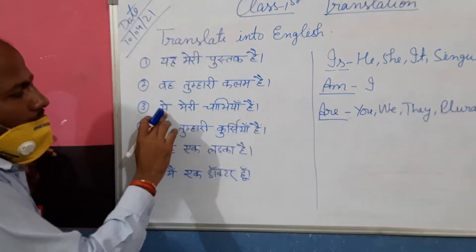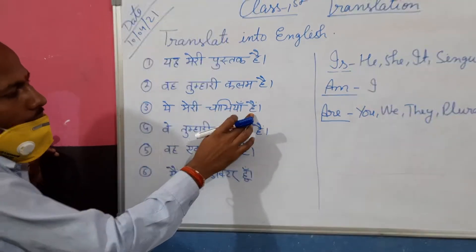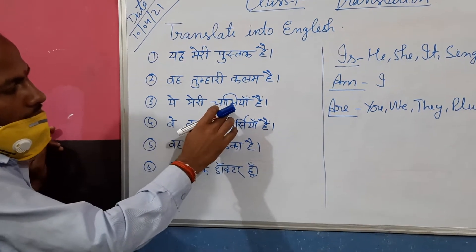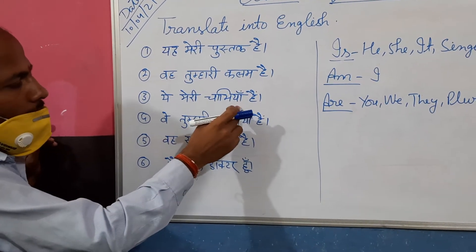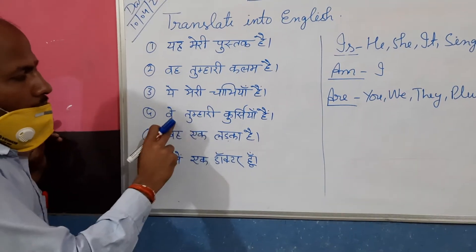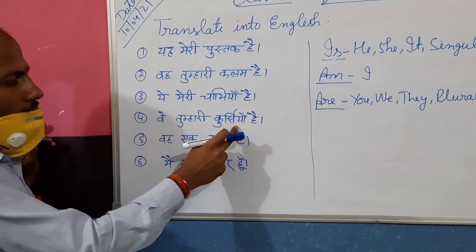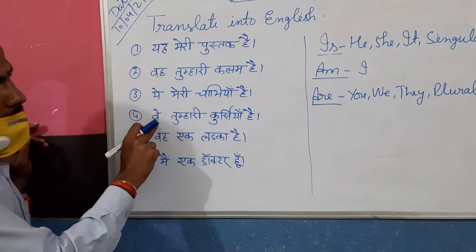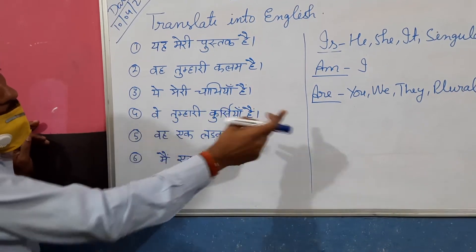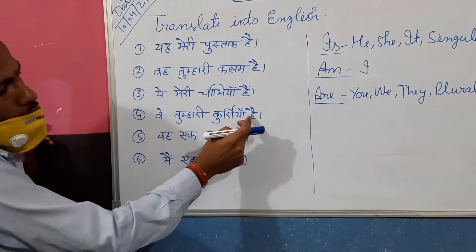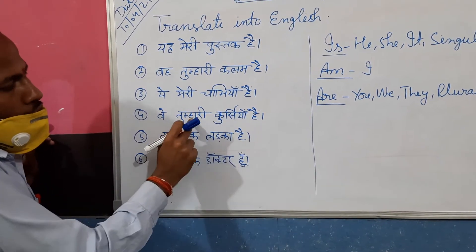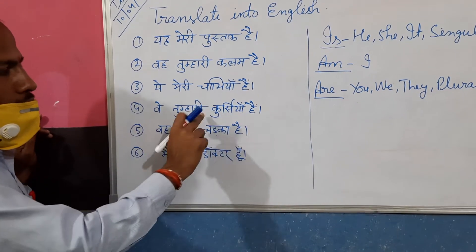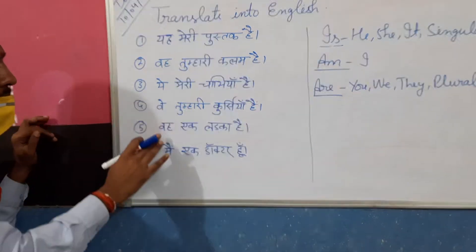These are my keys — these are my keys; key is the plural form. Where are your keys? Those are your chairs, those are your chairs.